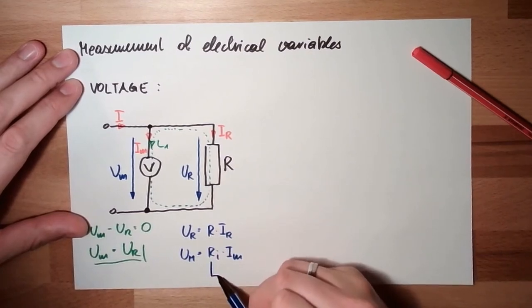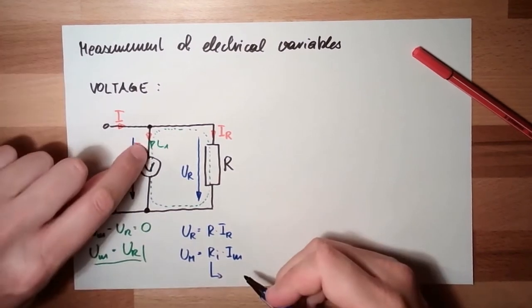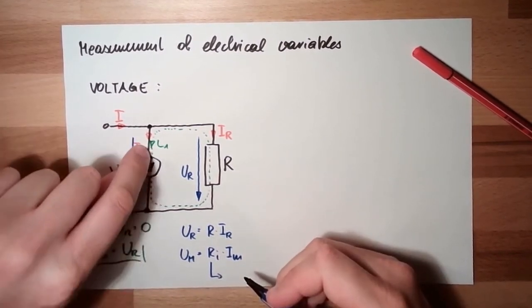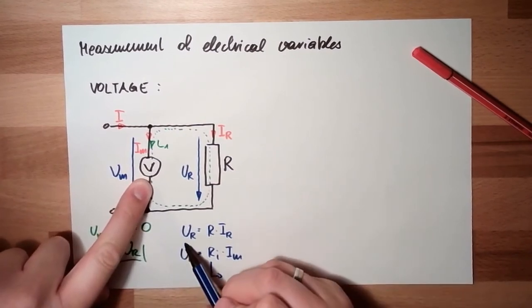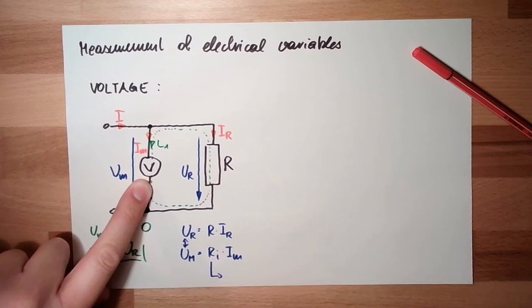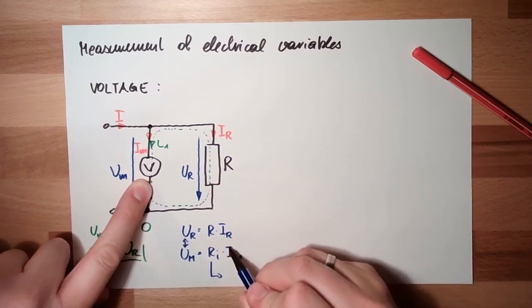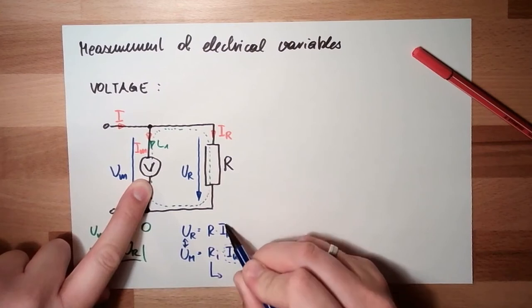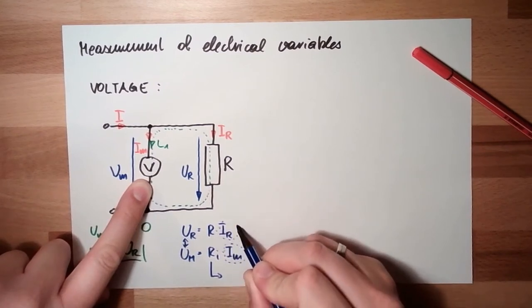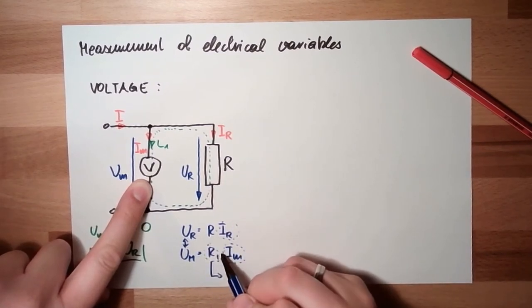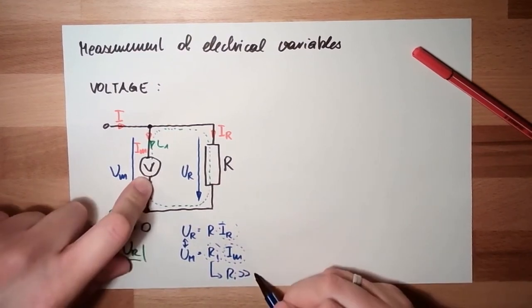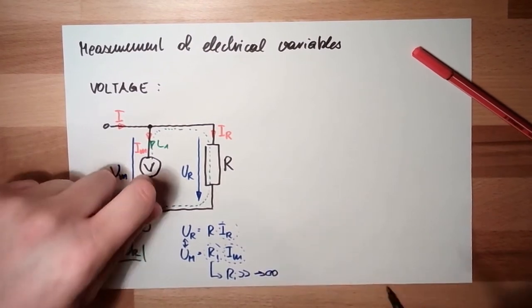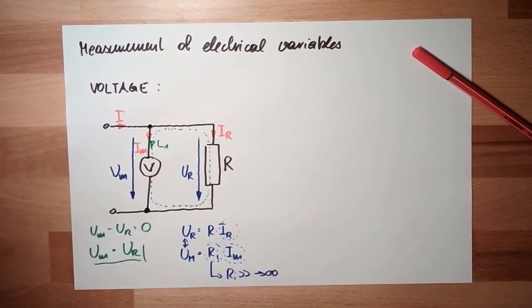This Ri is the internal resistance of our voltage measurement device. And these two things are the same. And this here must be very small compared to this here. So this here must be big, big, big. Ri must be big. Ideally would be infinity.